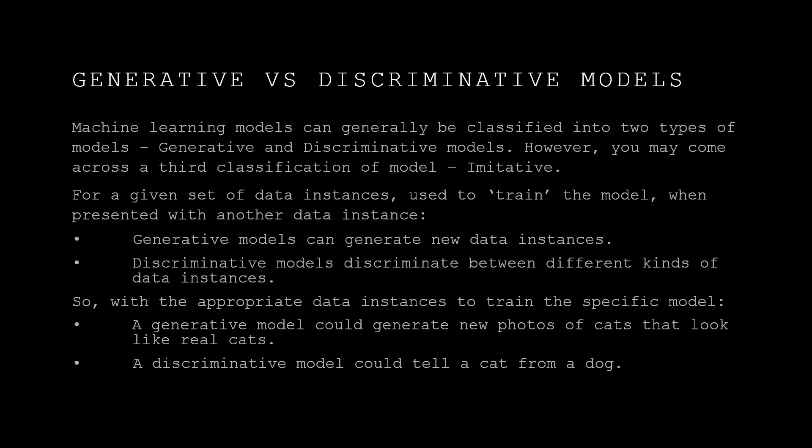However, you may also come across a third classification of model, referred to as imitative. For a given set of data instances — so if we're building a model using data instances and using those to train the model — when presented with new data instances, a generative model can generate new data instances based on the instances that were used to train the model.